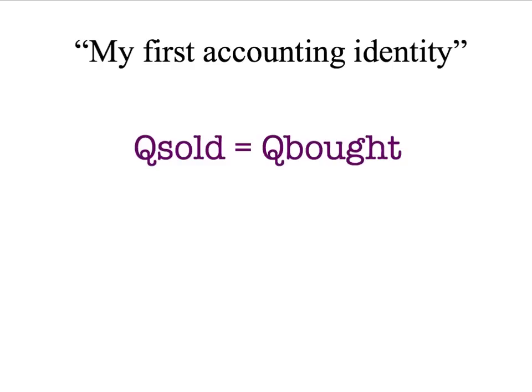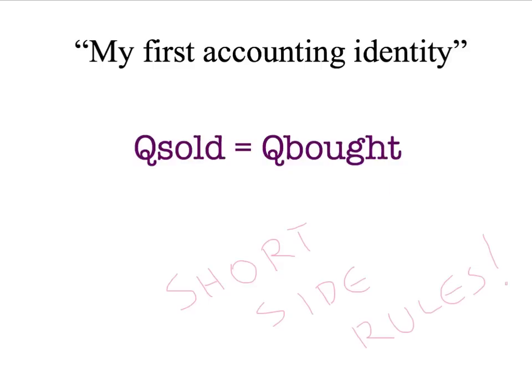Before we look at price ceilings or price floors, let me remind you of our simple accounting identity from the last presentation. In any market, at any time, whether in equilibrium or outside it, voluntary trade means you can't sell something unless there's a buyer and you can't buy something unless there's a seller. Voluntary trade means the quantity sold must always equal the quantity bought. This means the short side of the market always rules — it's the minimum of what people want to sell and what people want to buy that determines what's actually transacted.